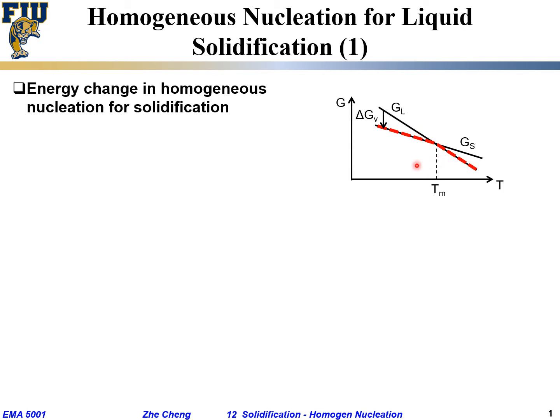To the left side of Tm means lower than the melting point. When you are below the melting point, which phase is more stable — solid or liquid? Solid. And more stable means it has lower Gibbs free energy. The red dashed line represents the equilibrium energy contour — the lower one at each temperature.